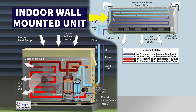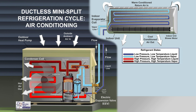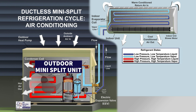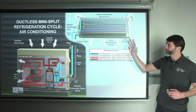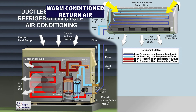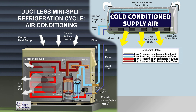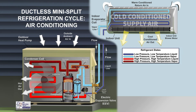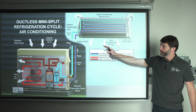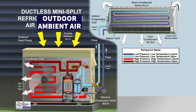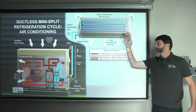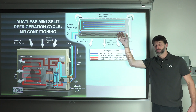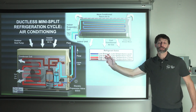Let me give you a quick tour of this picture. You have an indoor wall-mounted unit up high, a separation between inside and outside of the building, and then on the outside you have your outdoor mini-split unit. We're looking at the refrigerant tubing throughout the whole system. In air conditioning mode, you have warm return air in and cold supply air out on the indoor side, and outdoor ambient air in with hot air out on the outdoor side. This side absorbs heat via the refrigerant, and the outdoor unit is where heat is rejected.